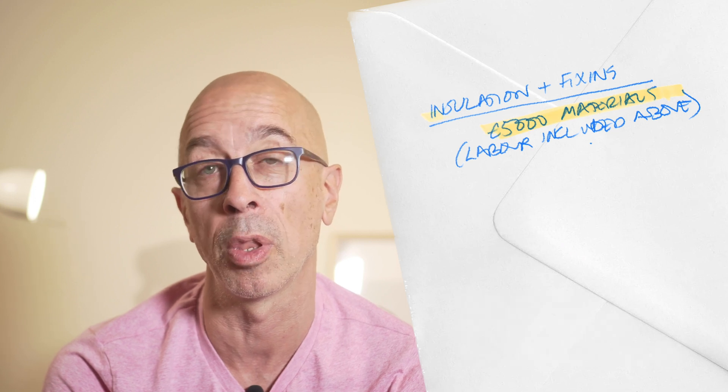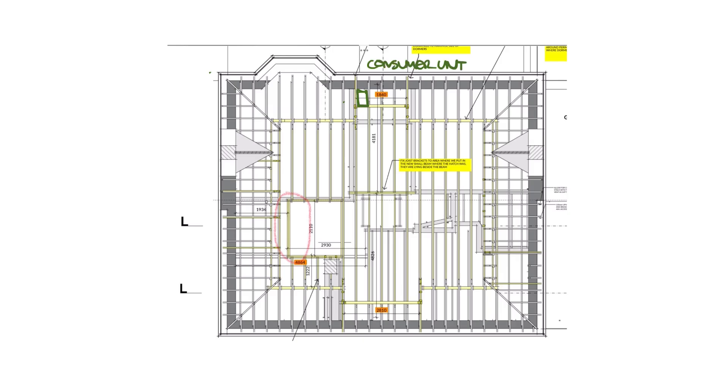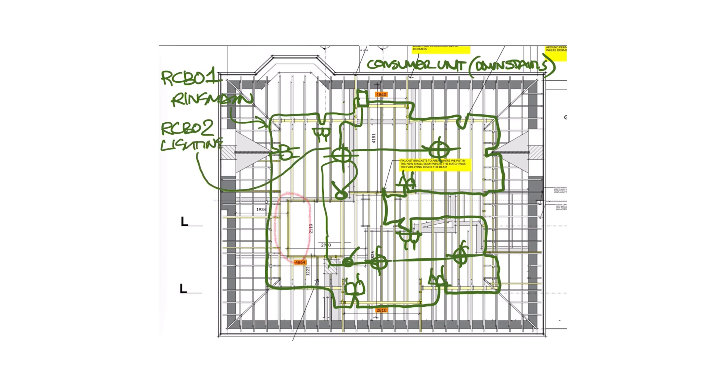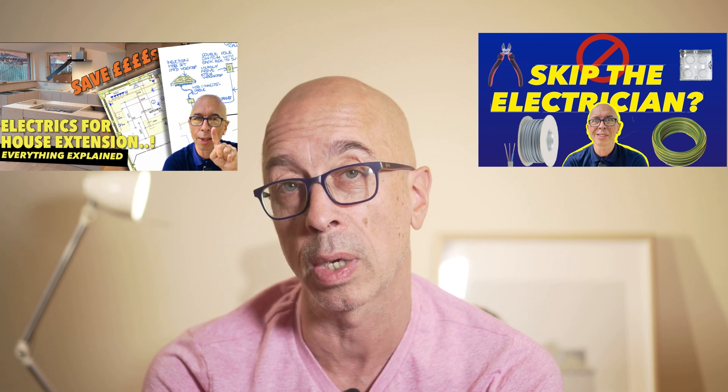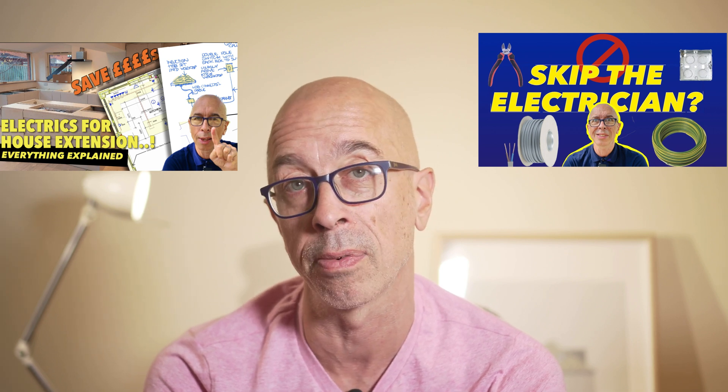Electrician can come in now and do their first fix, so running cables for the ring main, smoke detection, and a new lighting radio. See my video here if you want a bit more understanding of that stuff and see what you can and can't do yourself. Now assuming your consumer unit is up to modern standards and has two spare points on the bar for two new RCBOs.